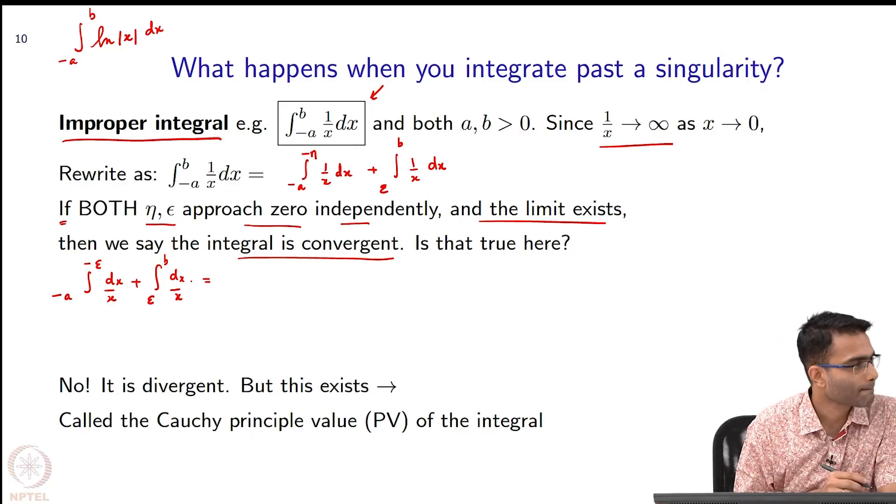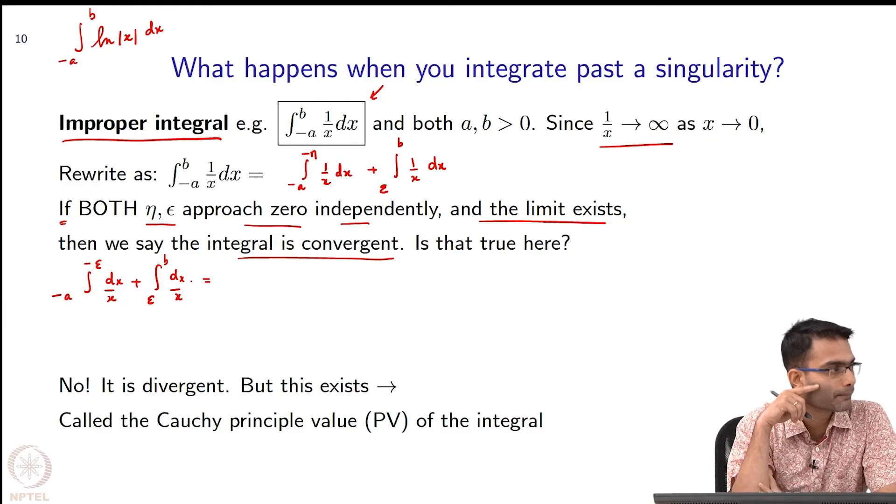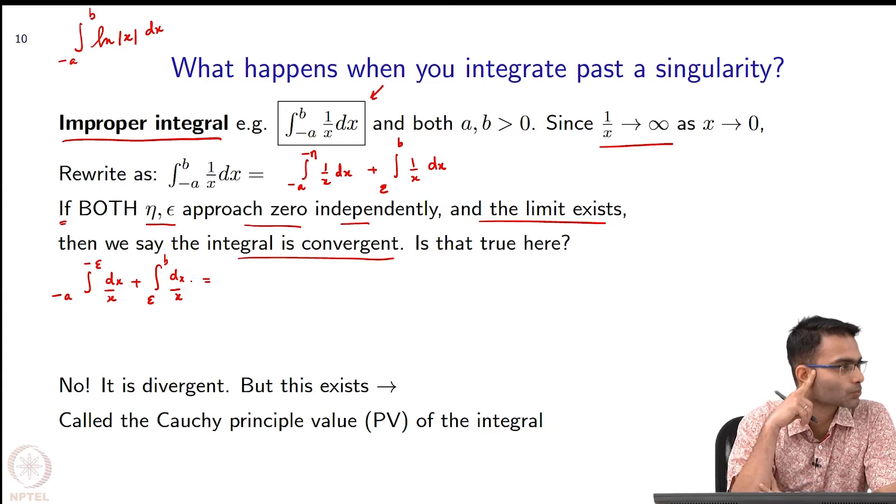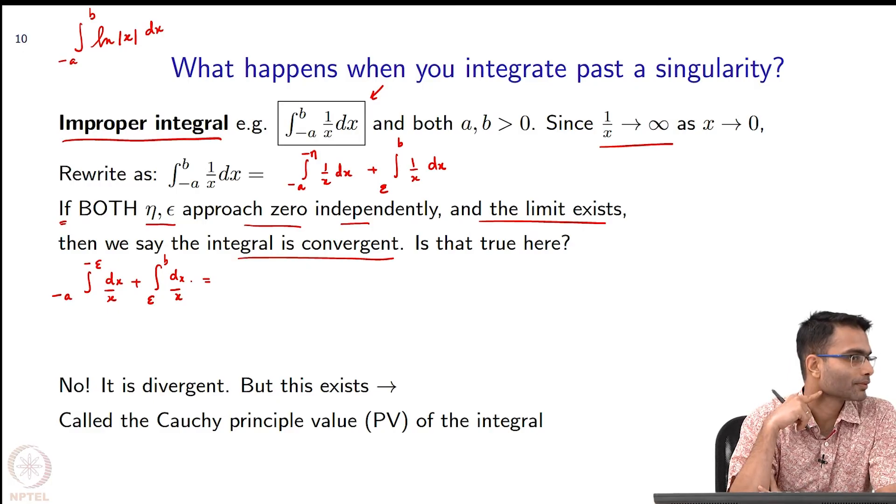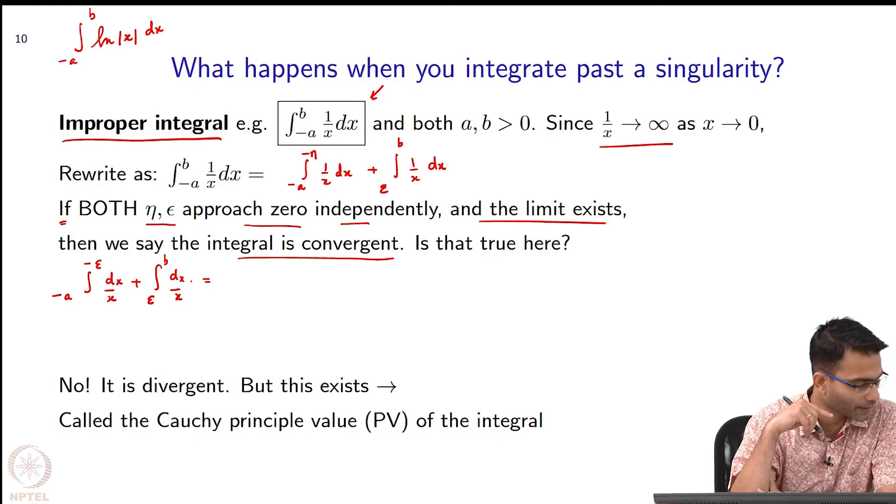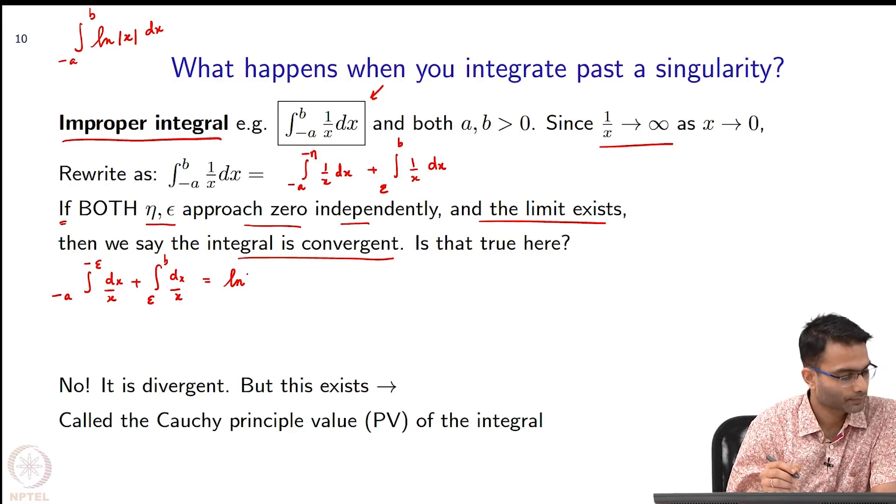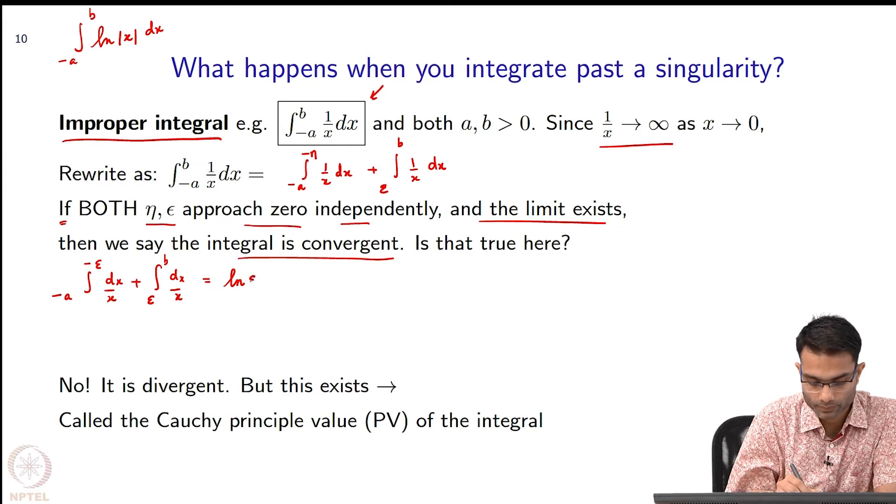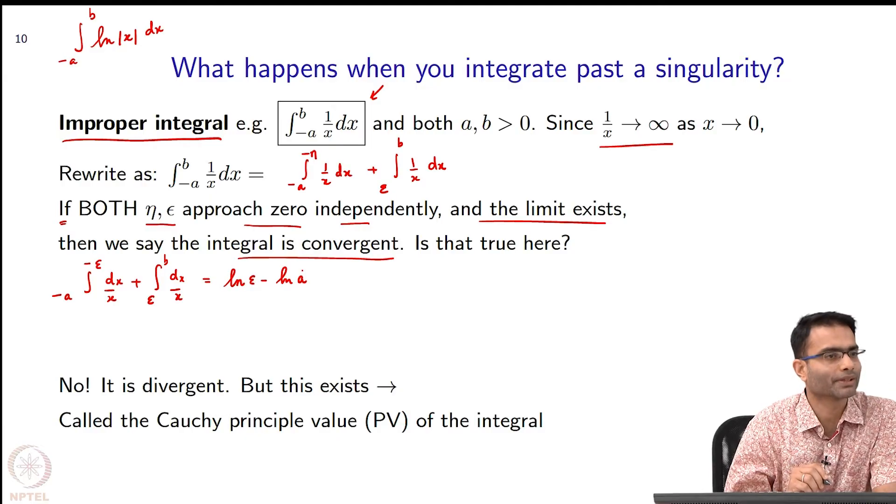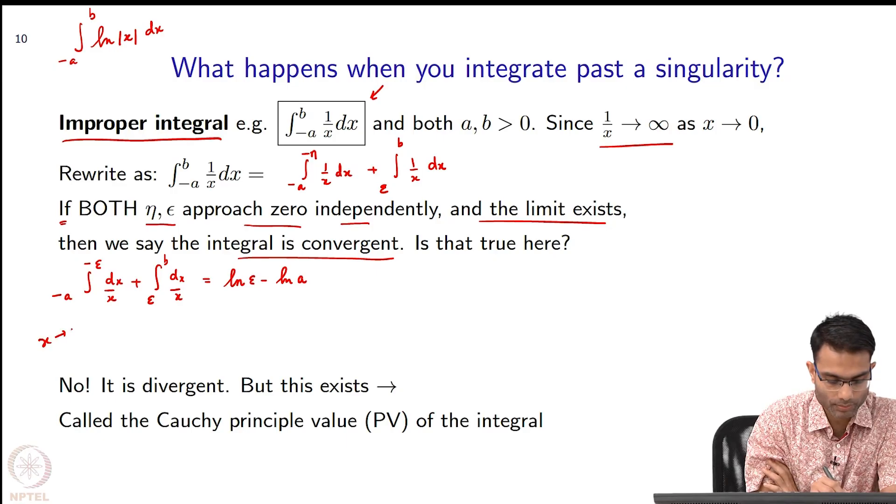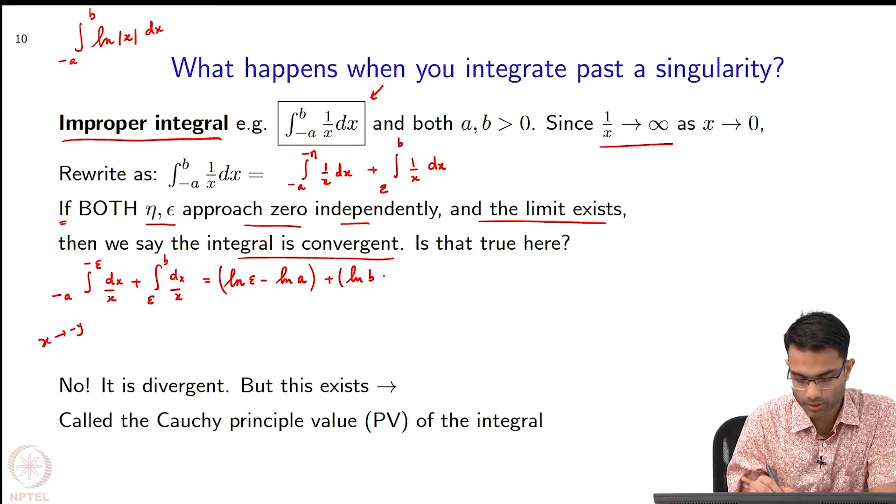To understand this more carefully, let us do minus a to minus epsilon dx by x plus epsilon to b. Let us make eta and epsilon to be the same. What can I write for this? What will the first term give me? I can do a substitution x equals minus y. There is no problem taking log - it will not become log of a negative number. What will happen? dx will become minus dy. What will I get? Epsilon to a. Log of what do I get? Simple integration, just do a change of variables x is minus y.